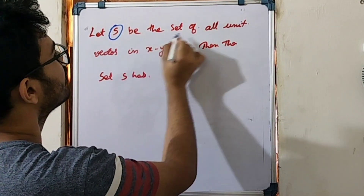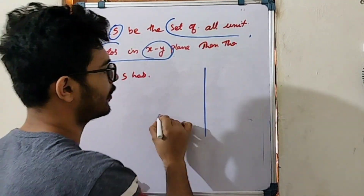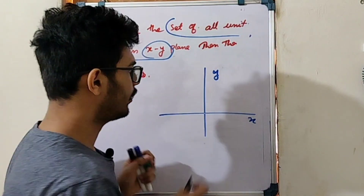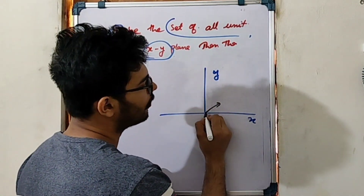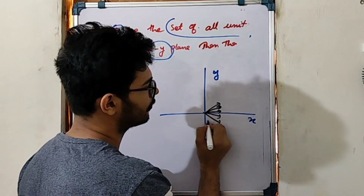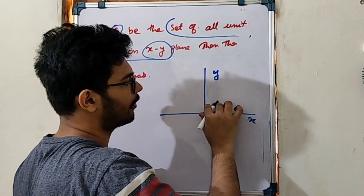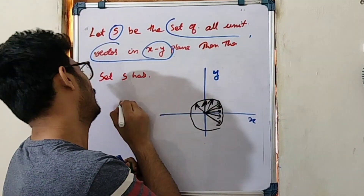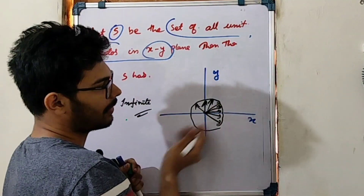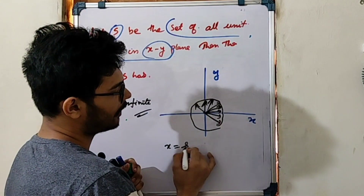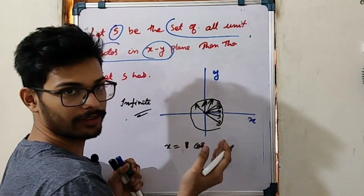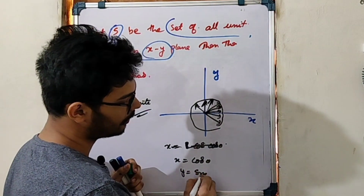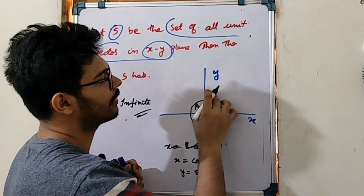Now let S be the set of all unit vectors in the xy plane. We will find the set of all unit vectors. A unit vector in the xy plane has magnitude 1, so it forms a unit circle. The parametric form gives x equal to cos theta and y equal to sin theta, since the magnitude equals 1. This is the parametric equation of a circle with unit radius.